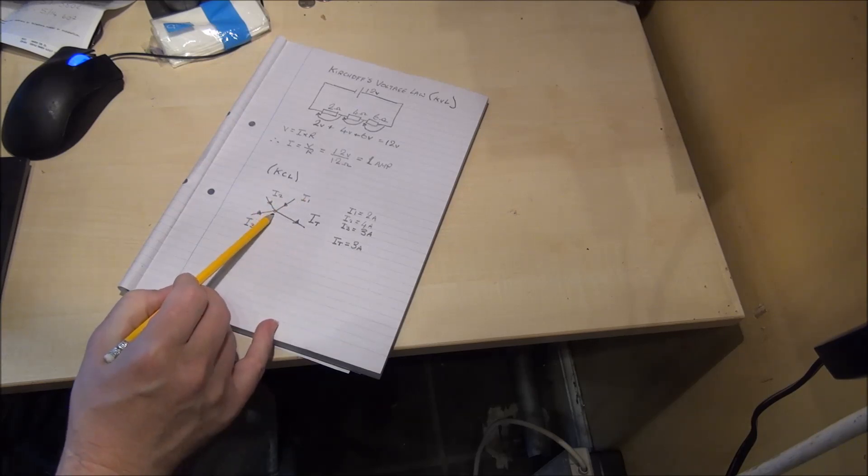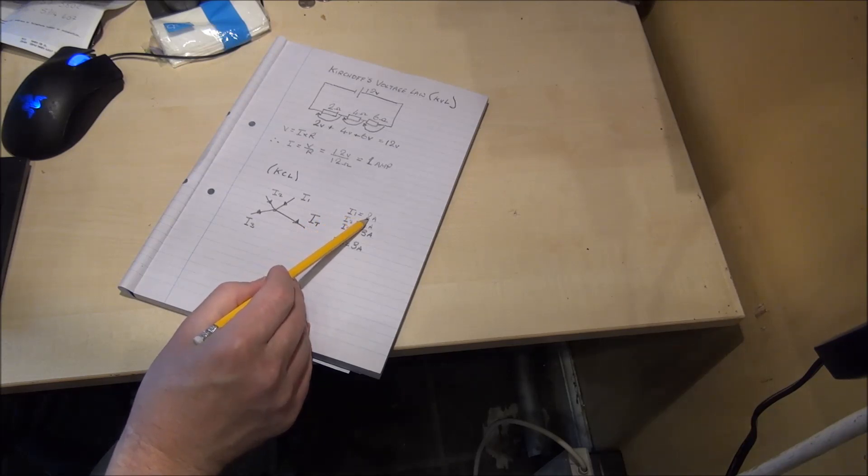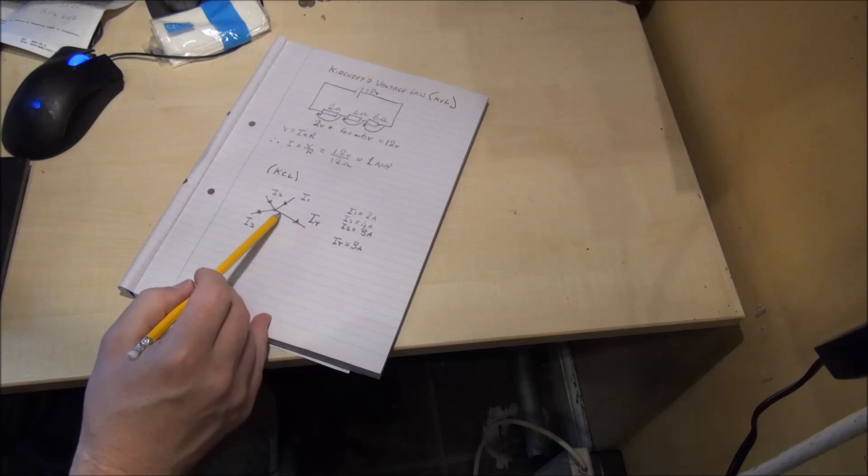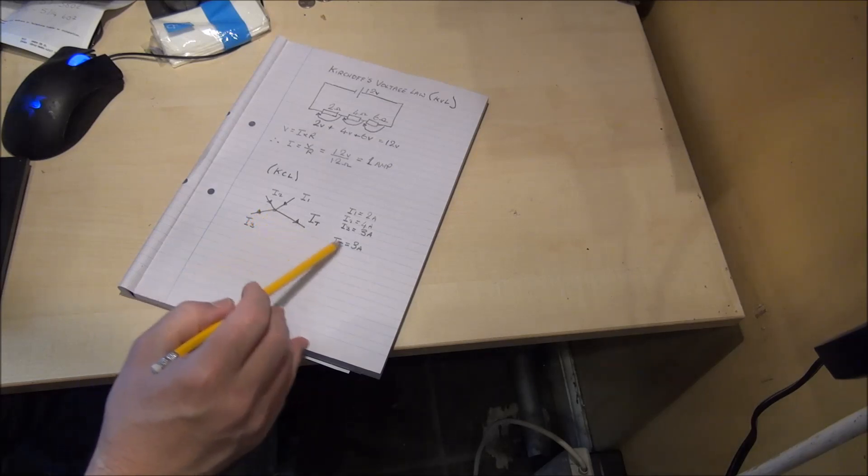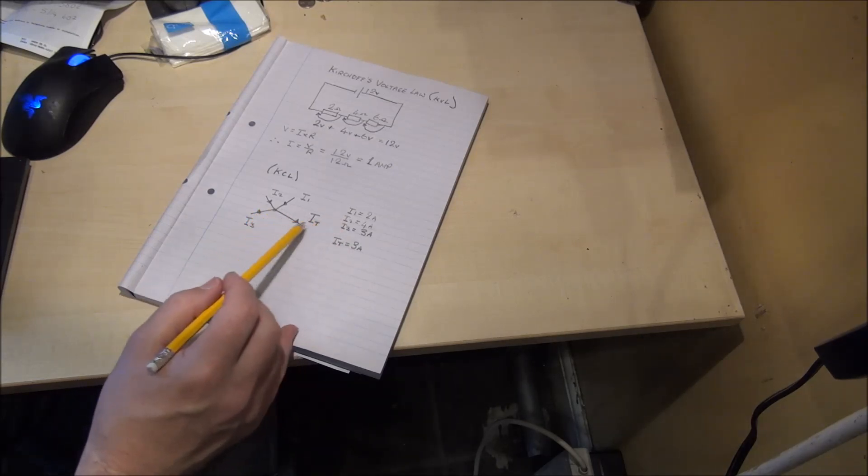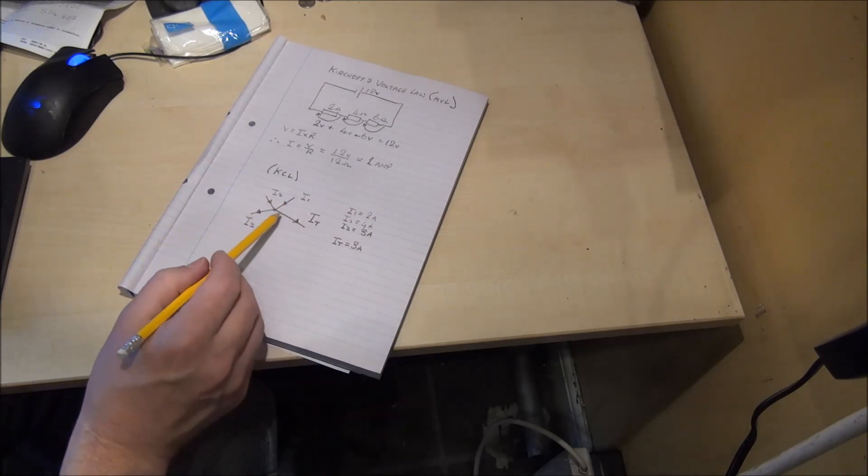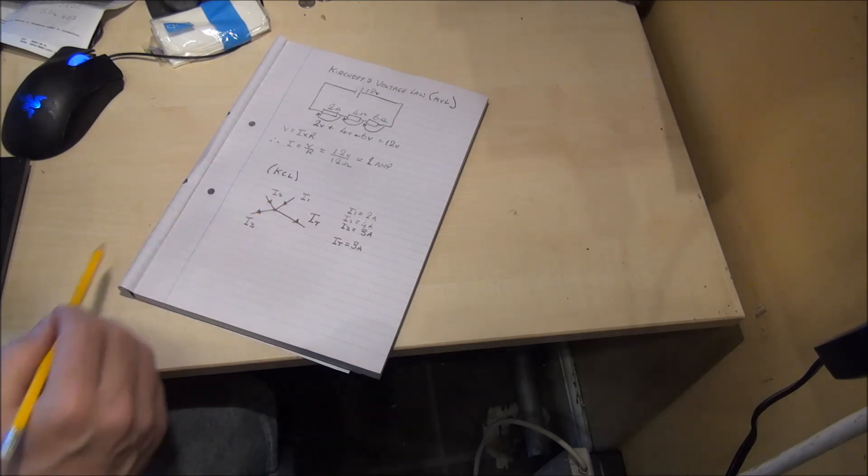Here we have a junction and we've got four currents, we've got I1 is equal to 2 amps, I2 is equal to 4 amps and I3 here is equal to 3 amps. IT in this branch is equal to 3 amps, so effectively we have 6 amps flowing into the junction and we have 6 amps flowing out of the junction.